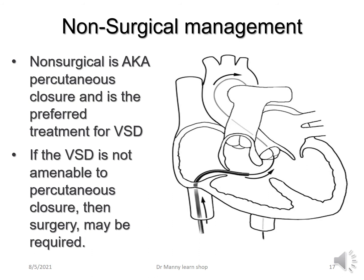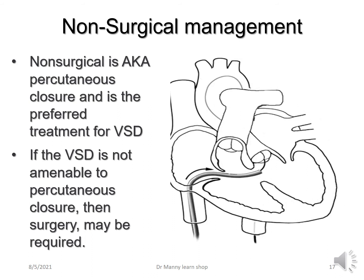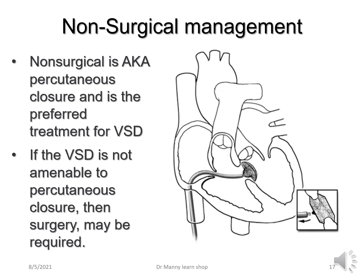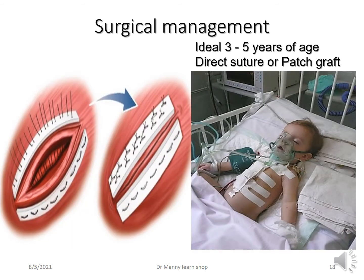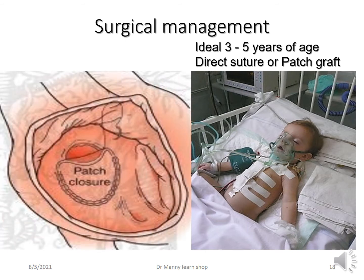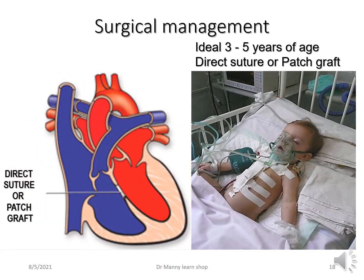Typically, a catheter is inserted into the femoral vein to enter the right side of the heart, and fed up using fluoroscopy. The catheter is passed through the ventricular septal defect, and if successful, closure is achieved — in this case, a muscular VSD closure. Surgical management, ideally between the ages of 3 to 5, uses a direct suture or patch graft, which requires open heart surgery, resulting in muscular VSD closure.